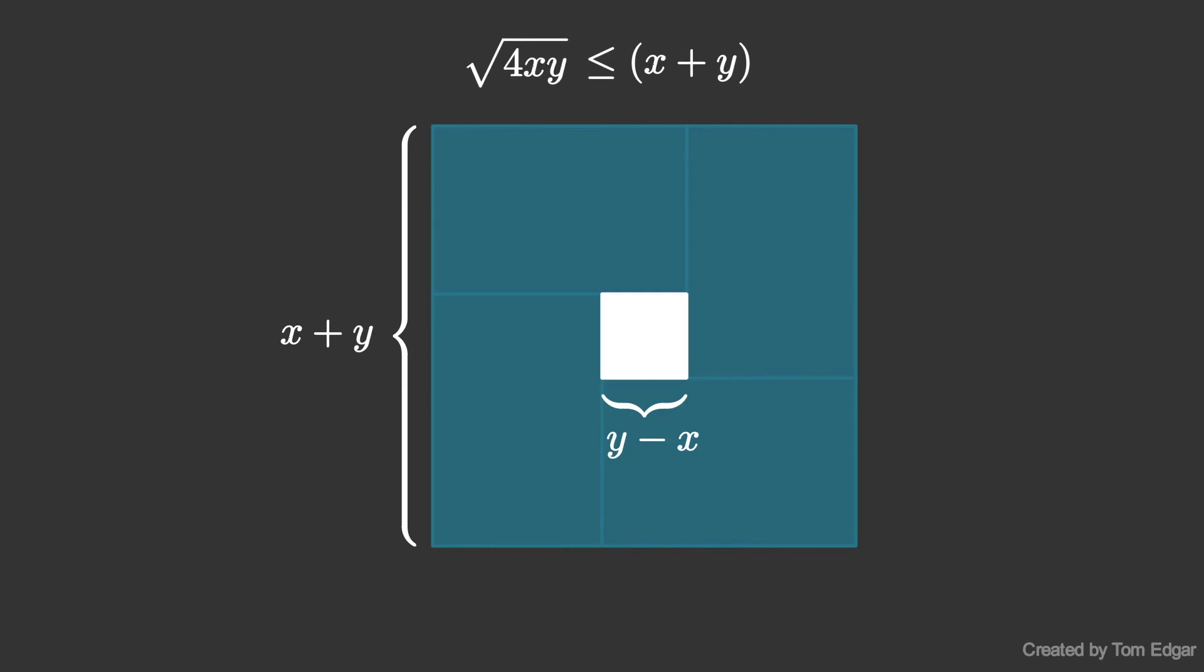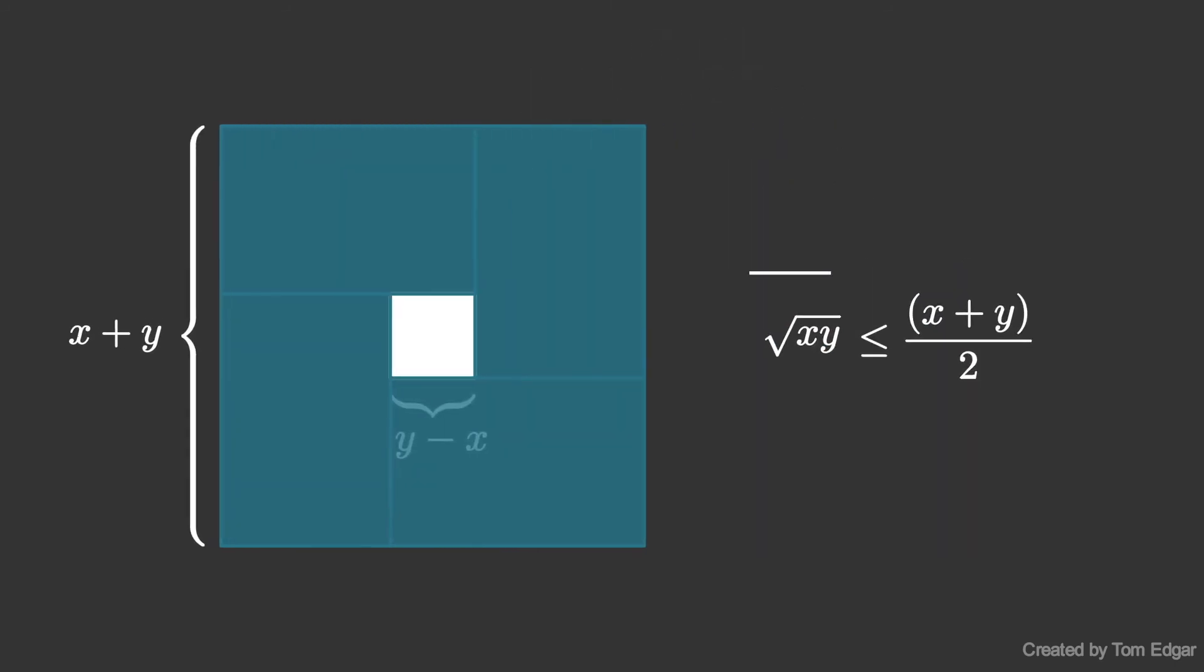Then we divide both sides by 2, and we obtain the inequality square root of xy is less than or equal to x plus y divided by 2. This is the arithmetic mean geometric mean inequality.